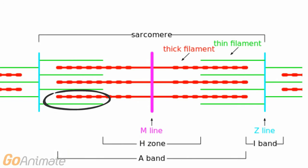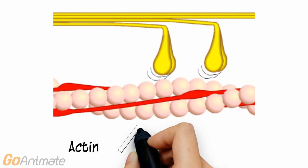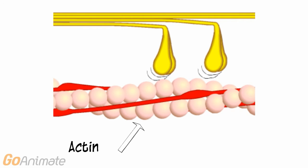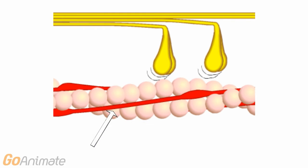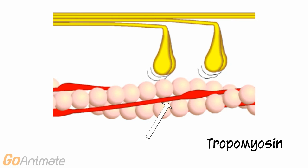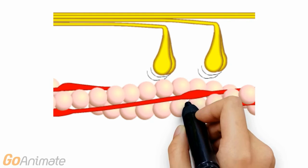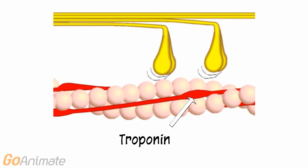Let's take a closer look at these filaments. Actin, also known as the thin filament, is a double helix protein. Actin has another double helix protein called the troponin-tropomyosin complex wrapped around it. Here is the tropomyosin, and here is the troponin.